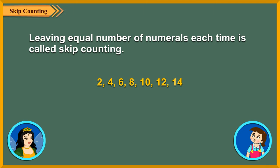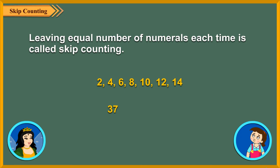We can start counting from any number. For example, if the first number is 37, then to get the second number of the sequence, we will add 2 to the previous number. Thus, the numbers obtained will be 37, 39, 41, and so on.